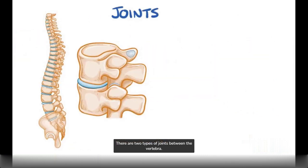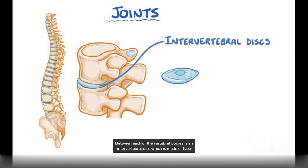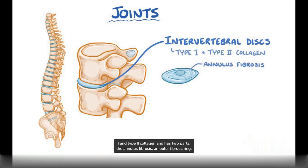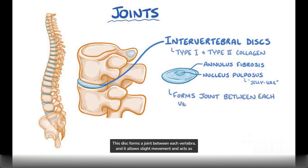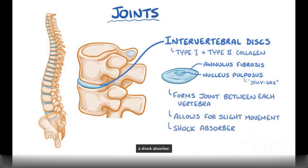There are two types of joints between the vertebrae. Between each of the vertebral bodies is an intervertebral disc, which is made of type 1 and type 2 collagen and has two parts: the annulus fibrosus, an outer fibrous ring, and the nucleus pulposus, an inner jelly-like substance. This disc forms a joint between each vertebra, and it allows slight movement and acts as a shock absorber.